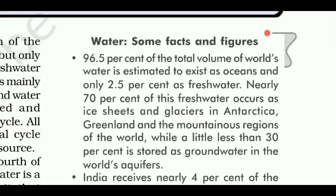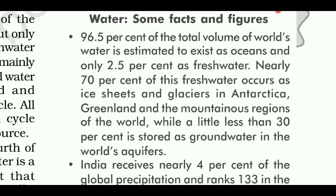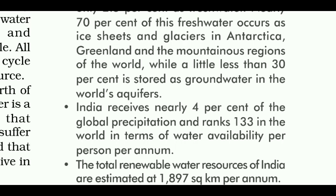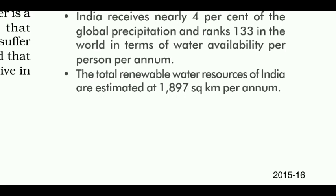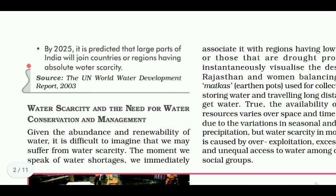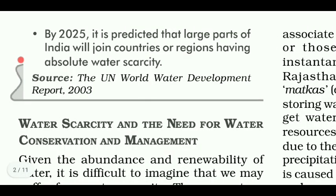Some facts and figures: 96.5% of the total volume of the world's water is estimated to exist as oceans, and only 2.5% as freshwater. Nearly 70% of this freshwater occurs as ice sheets and glaciers in Antarctica, Greenland, and the mountainous regions of the world, while a little less than 30% is stored as groundwater in the world's aquifers. India receives nearly 4% of the global precipitation and ranks 133rd in the world in terms of water availability per person per annum. The total renewable water resources of India are estimated at 1897 km² per annum. By 2025, it is predicted that large parts of India will join countries or regions having absolute water scarcity.